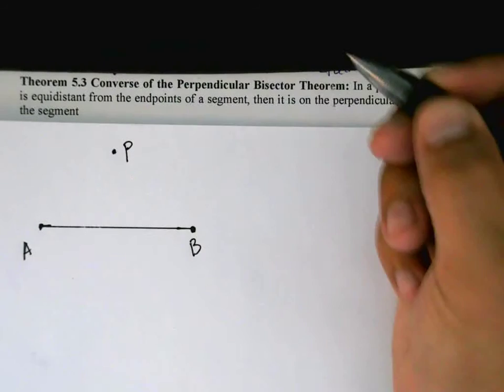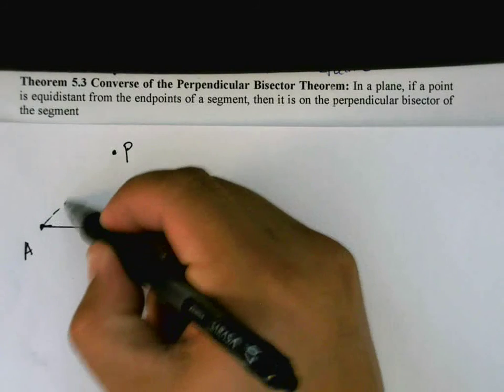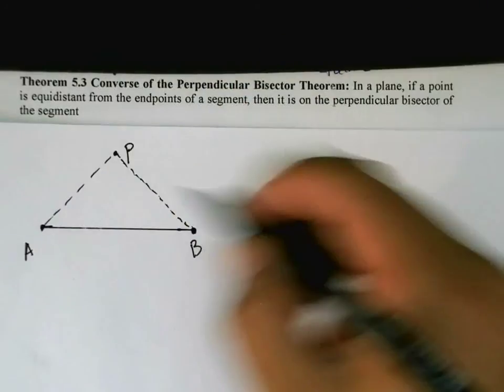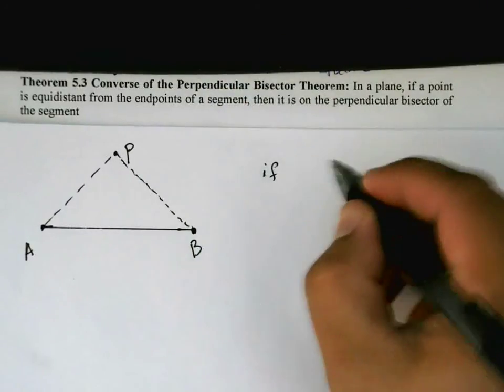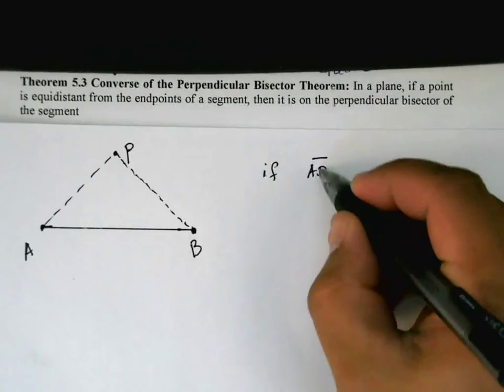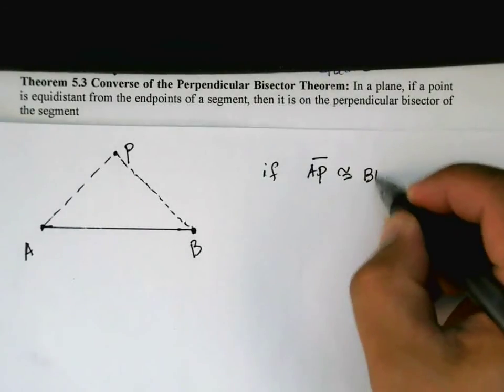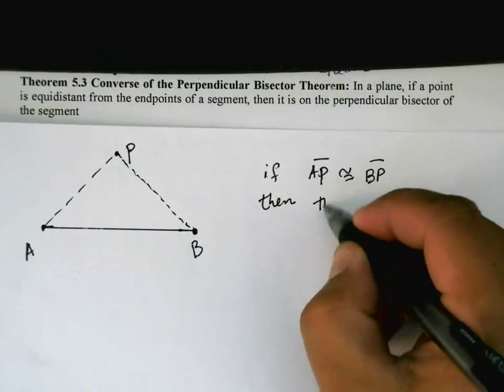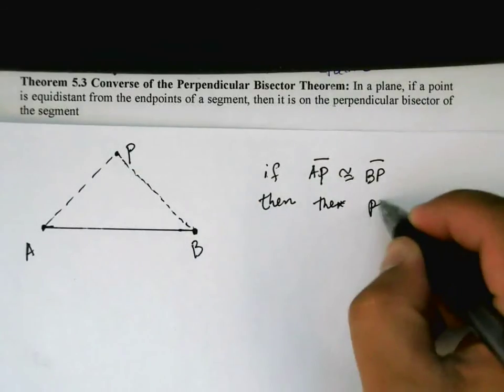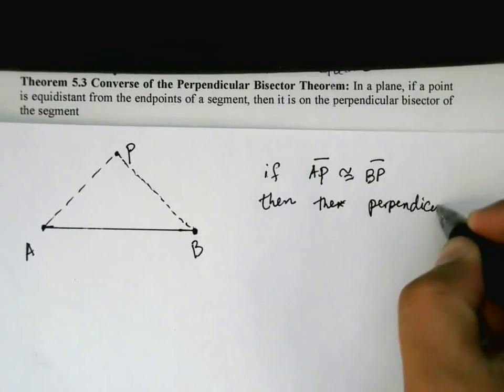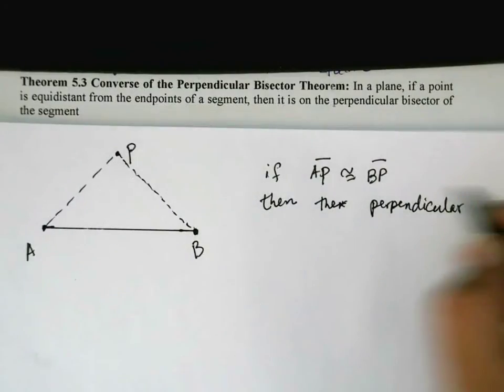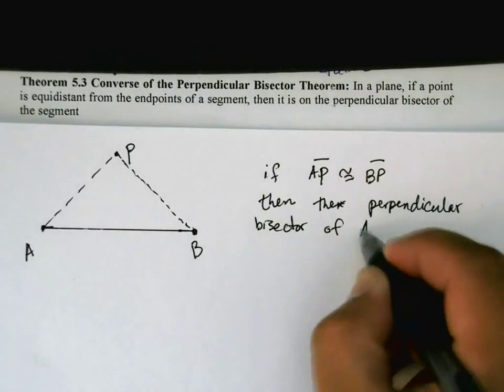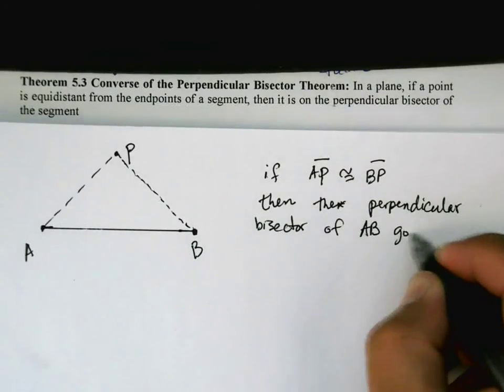I'm drawing in these dotted lines because we don't know that we need them yet. But we know that if AP, line segment AP, is congruent to line segment BP, then we can conclude that the perpendicular bisector of AB goes through P.